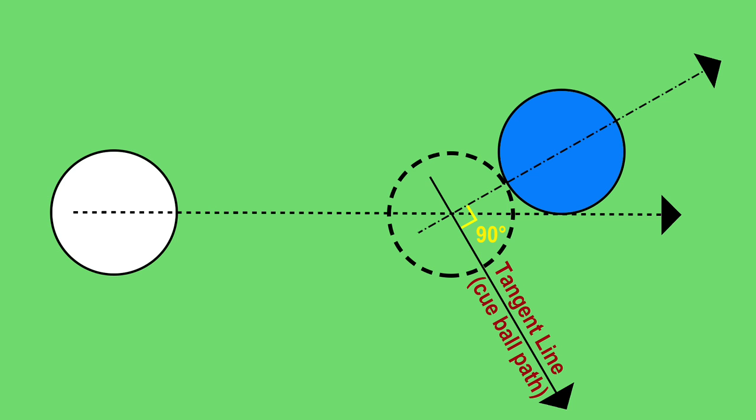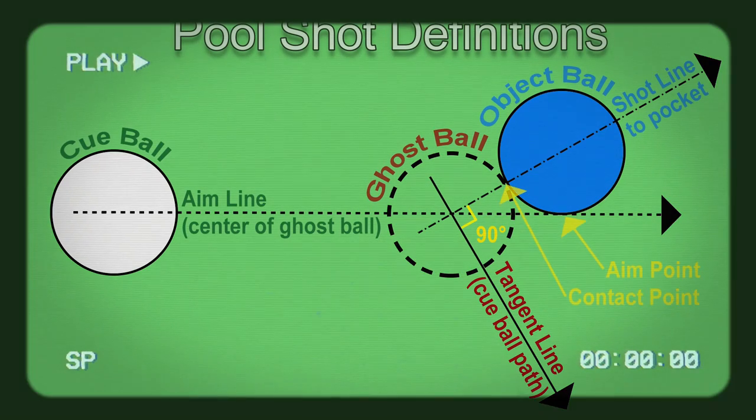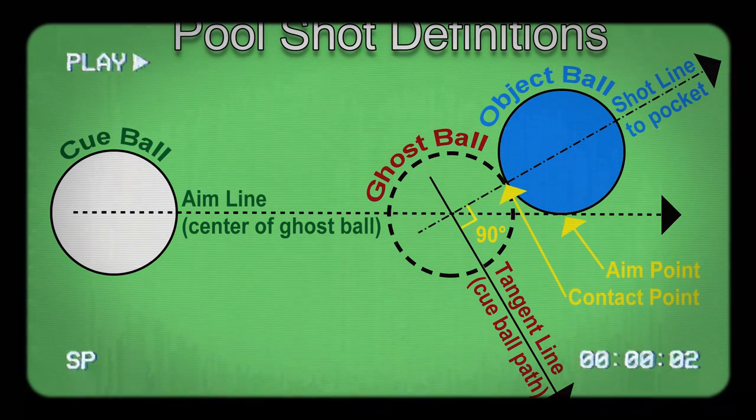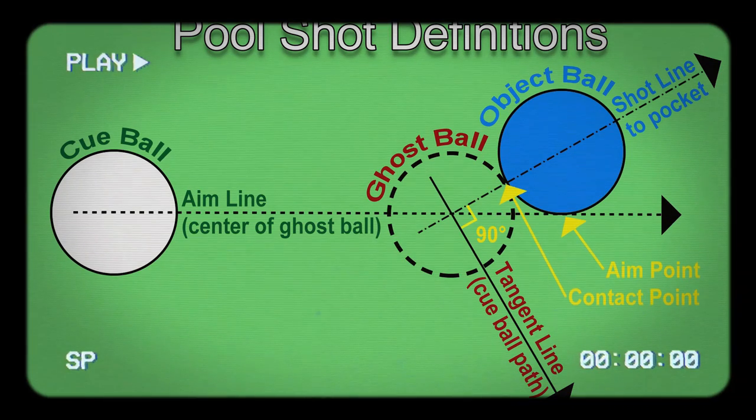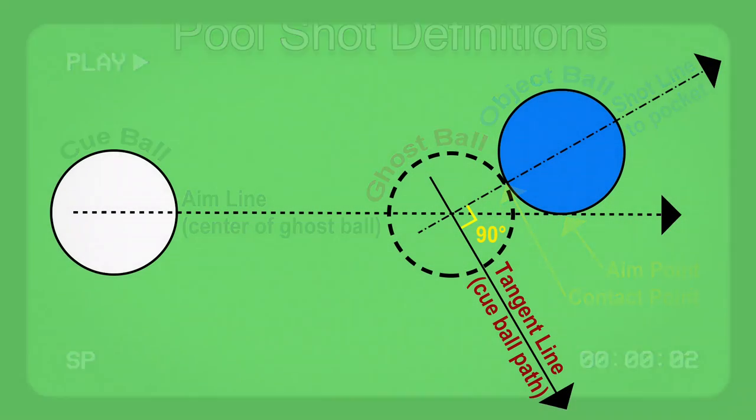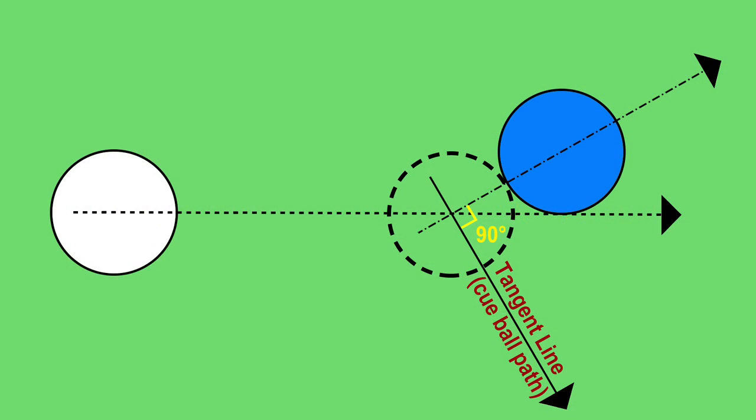In my how to aim video, I said, the cue ball always travels along the tangent line after leaving the object ball, without exception. Really? Without exception? Are you sure?